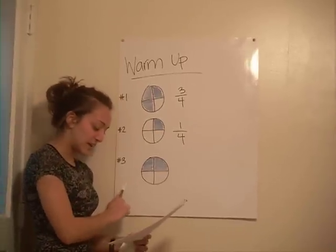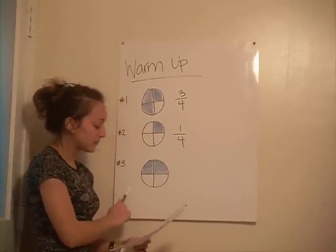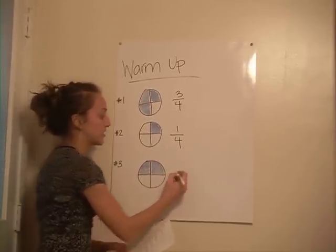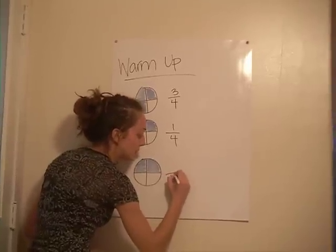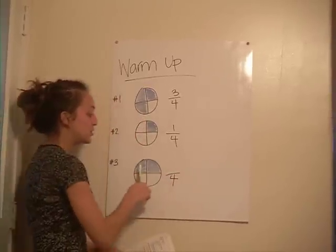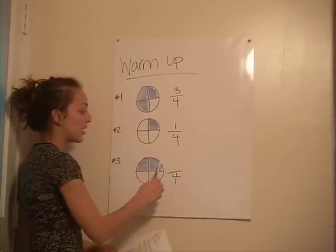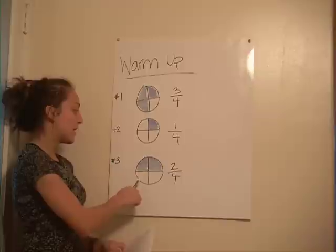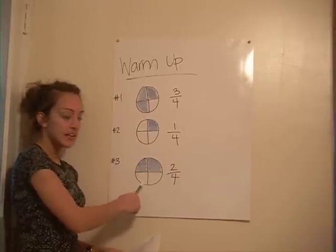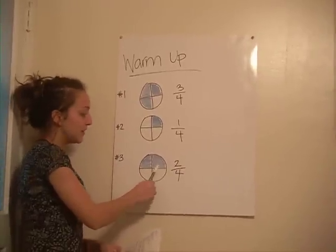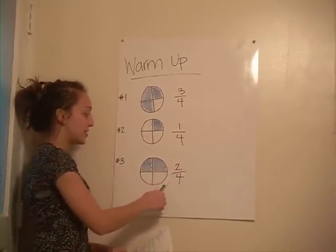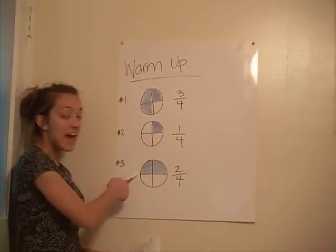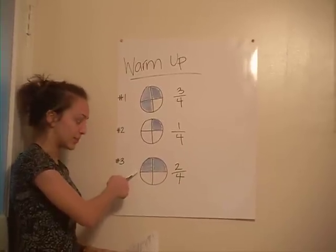Now, as we look at the third figure down here, out of four sections, two are shaded blue. Now, if we look at the circle right here, even though two out of four are shaded, it also looks like half of the circle is shaded.